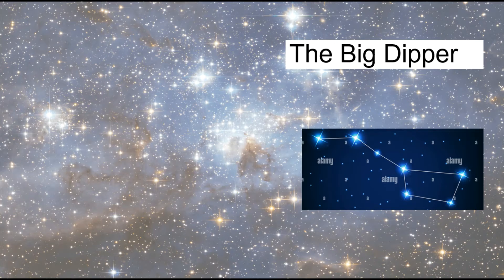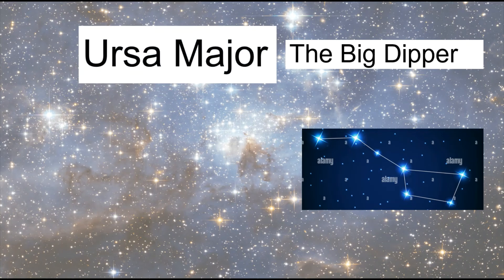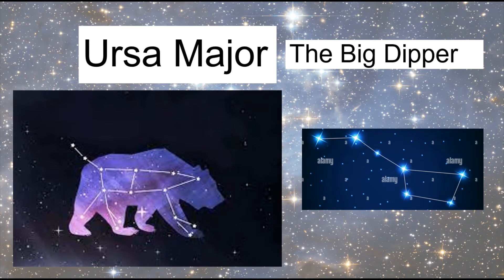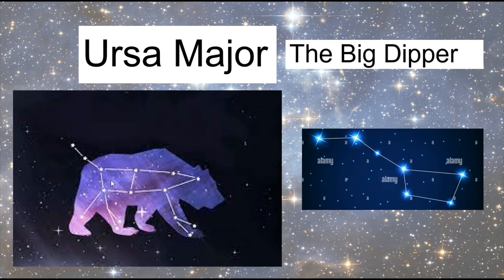Some people imagine the Big Dipper as part of Ursa Major, another name for which is the Great Bear. You can see there are seven stars in the Big Dipper and seven more here — look at the tail: 1, 2, 3, 4, 5, 6, 7. So the Big Dipper is part of a very big bear.